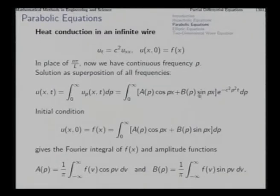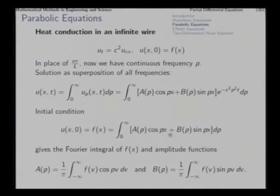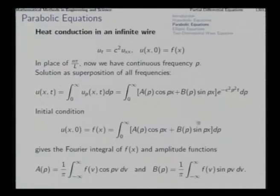The solution u_p, in a manner analogous to the Fourier series case, gives a Fourier integral where the coefficients a(p) and b(p) are found in the usual manner. Whatever role the Fourier series played in the finite case is now played by the Fourier integral. Frequencies are now continuous and the coefficients are determined through integrals.